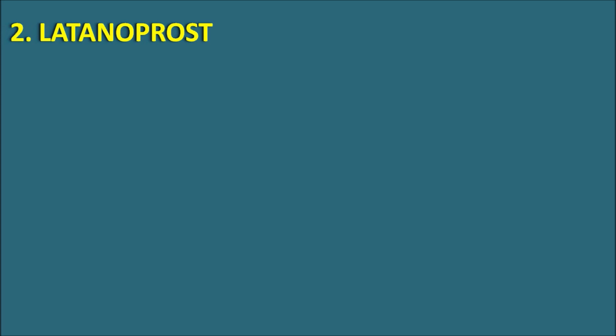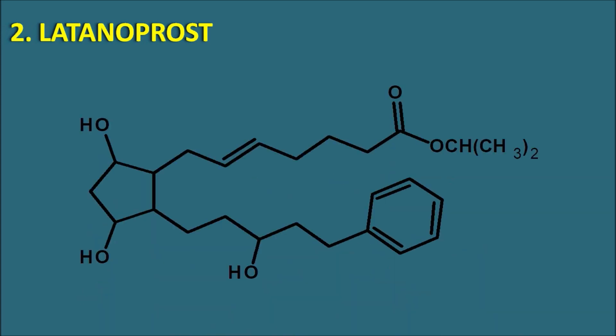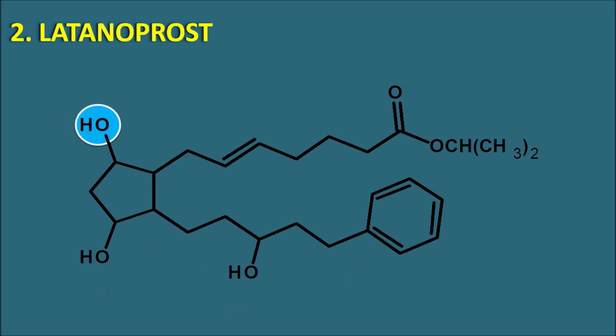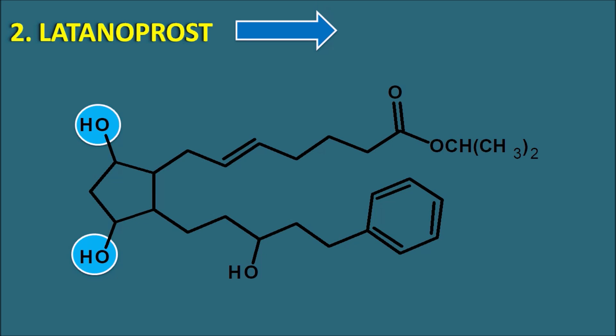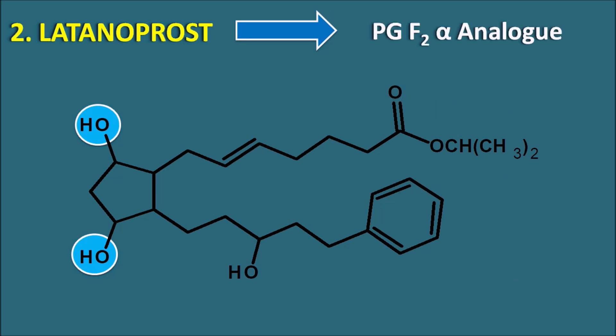The second prostaglandin F analog is latanoprost. Latanoprost has an OH group at the 9th position and an OH group at the 11th position. At the 1st position, it forms an ester with an isopropyl group, and on the other terminal it has a phenyl ring system. Because it has 9,11-dihydroxy groups, latanoprost is a prostaglandin F2-alpha analog.